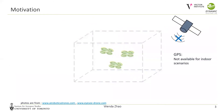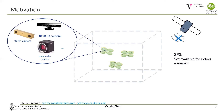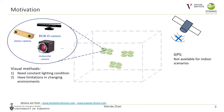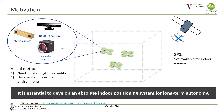Without global satellite-based localization, one popular way for indoor navigation is using visual methods like visual inertial odometry or visual SLAM. However, these methods require constant lighting conditions and have limitations in changing environments. Therefore, it is essential to develop an absolute indoor positioning system for long-term autonomy.